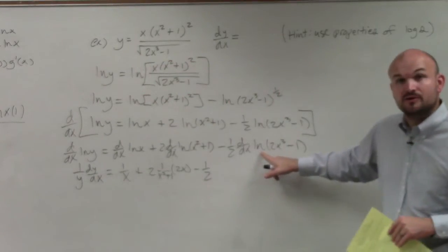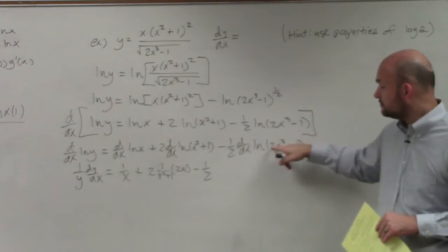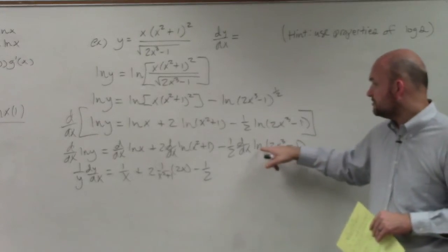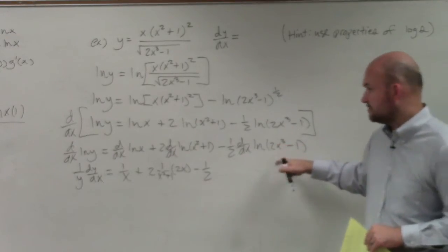Minus 1 half. Again, I have to do the chain rule again over here. So, it's 1 over x, but of my inner function, which is 2x cubed minus 1. So, it's going to be 1 over 2x cubed minus 1 times the derivative of my inner function, which will be 6x squared.